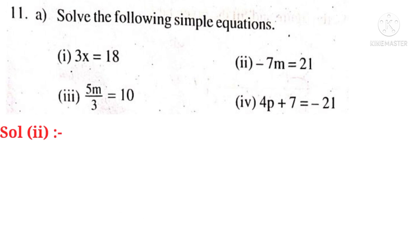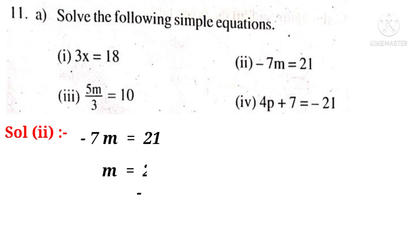Solution 2: minus 7m is equal to 21. m is equal to 21 by minus 7. On simplification by 7, 3 times. So, m is equal to minus 3 is the solution.